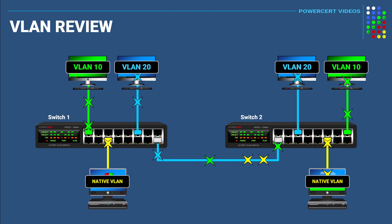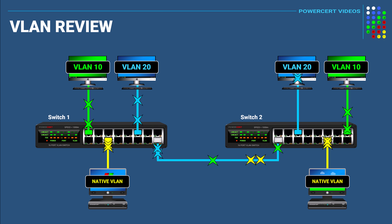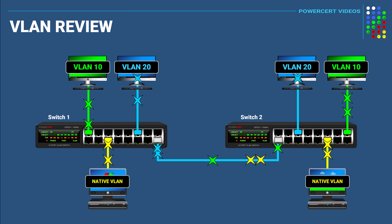As a review, here we have three VLANs — VLAN 10, VLAN 20, and the native VLAN — and their broadcast traffic, which are frames, are separated from the other VLANs. Just to clear things up, this does not mean that these computers can't communicate with computers on different VLANs, because they can. The creation of VLANs just means that their broadcast traffic or frames are kept within their own VLAN.